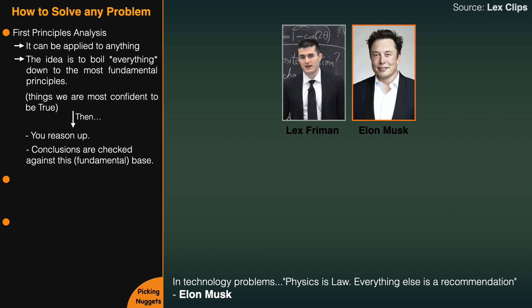Some basics in physics would be: are you violating conservation of energy or momentum? If so, it's not going to work — that establishes whether something is possible. Another good physics tool is thinking about things in the limit. If you take a particular thing and scale it to a very large number or a very small number, how do things change?